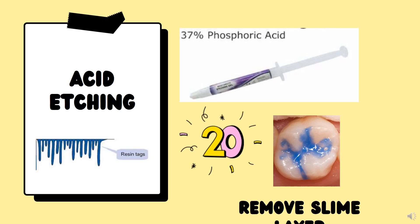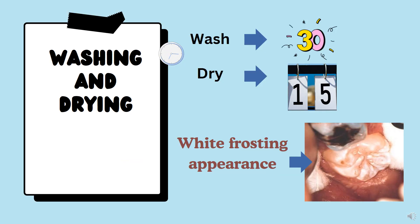After acid etching, wash for 30 seconds, then dry for 15 seconds. After acid etching, you should see a white frosty appearance. If you see this white frosty appearance, the etching is successful. If it is not seen, repeat the etching. Remember: the white frosty appearance is an important indicator of successful etching.